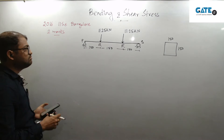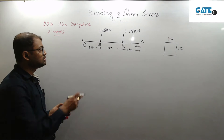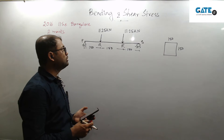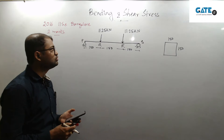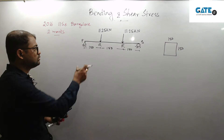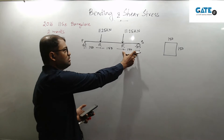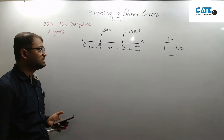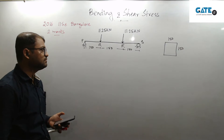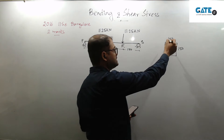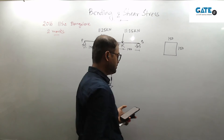This is the beam given load, point load, 11.25 kN each. 150, 150, 150 — total 450 mm span, and the cross section is 150 by 150. Considering linear stress distribution across the cross section, the modulus of rupture is to be found in mega Pascal.